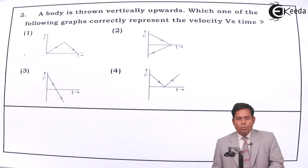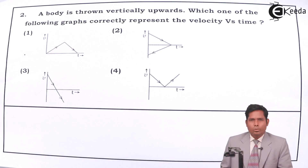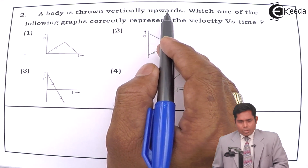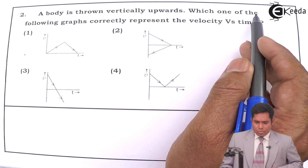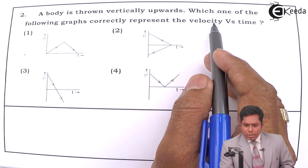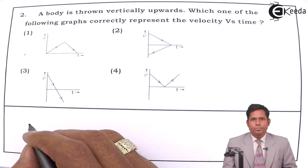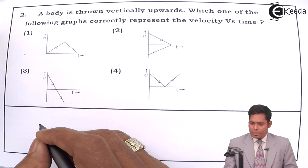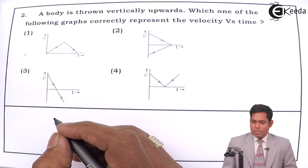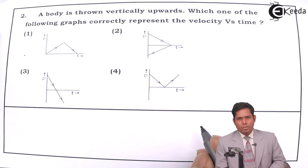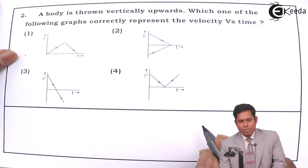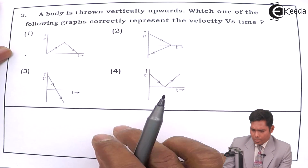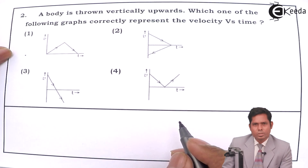Now let us move to question number two. The question is: a body is thrown vertically upward — which one of the following graphs correctly represents the velocity versus time? This is a very easy question, generally asked in board exams.